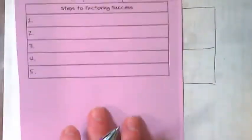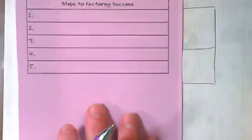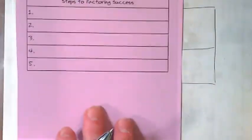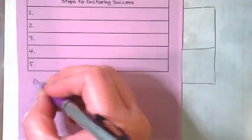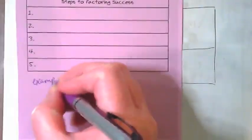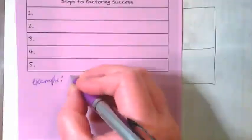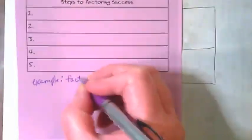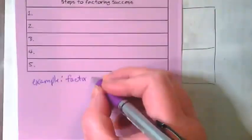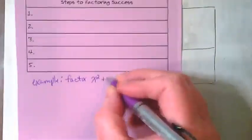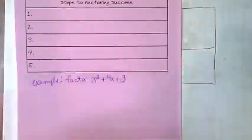So if you're all okay with that, we're going to go down to the steps to factoring success. There are five steps that we will be using to factor this way. We're going to do those five steps on the bottom with our example. So I'd like you to write the example we're going to factor: x squared plus 4x plus 3.